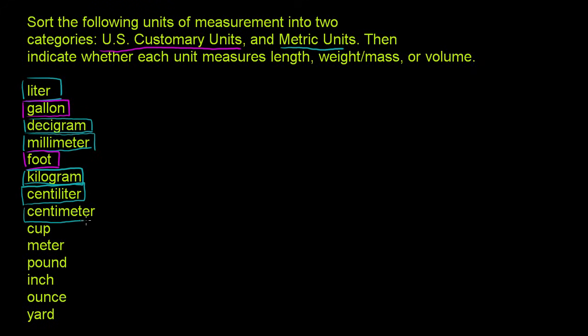Centimeter, meters are metric. And notice, we have the prefix in both cases. Centi means one hundredth. Cup, that is US customary units. We have to do that in the magenta. Cup, US customary units. Meter, that is the metric system.